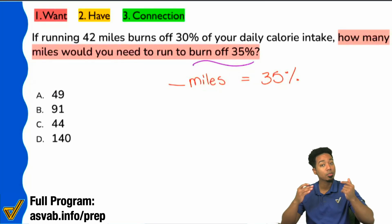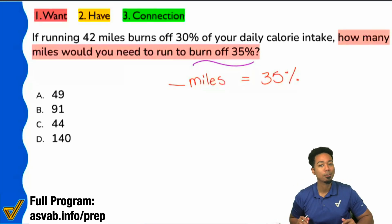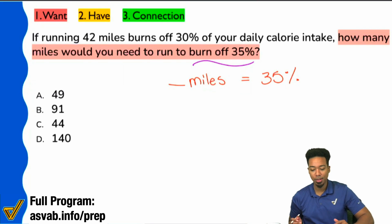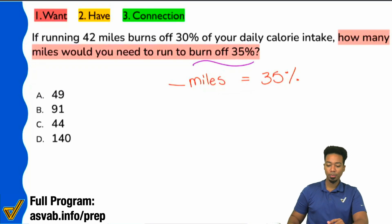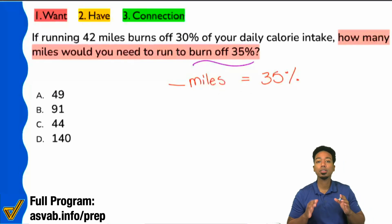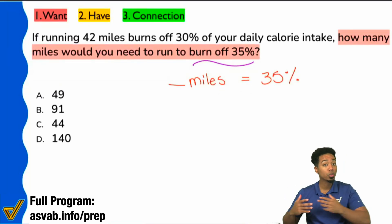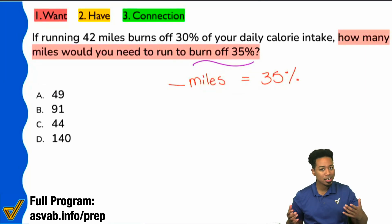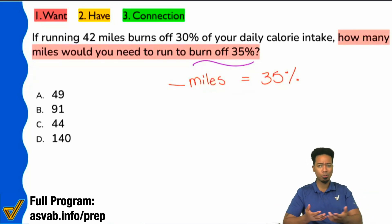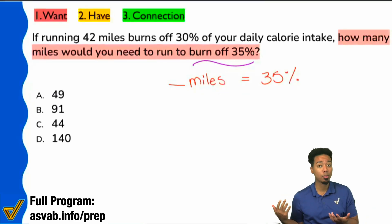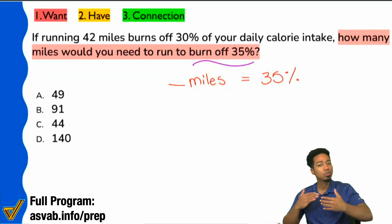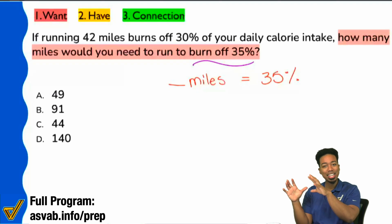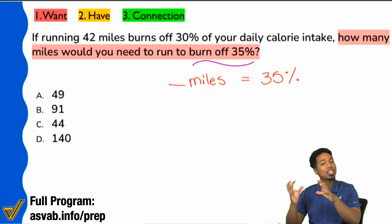I'm looking for the number of miles that represents 35%. And again, it doesn't matter what your skill level is. This first question — what do you want — isn't asking you to write a dissertation on how to solve the problem. It's really just telling you, can you identify what the problem is? What are we looking for? That's English, not math yet. Step two is where we're going to take that English and start turning it into math.